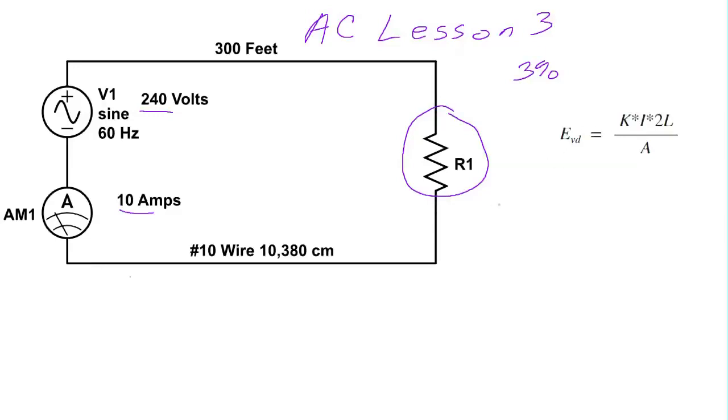EVD is our formula. The voltage drop is equal to K. In this case, K for copper wire, we're going to use 10.4 ohms per circular mil foot. So that's 10.4 for the copper wire. The current is 10 amps, so we'll put 10 amps in there for current.